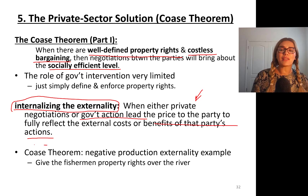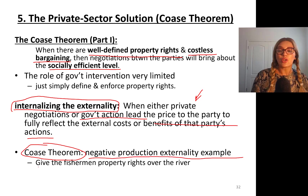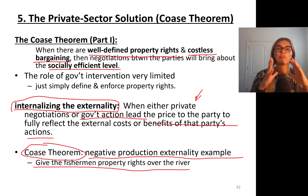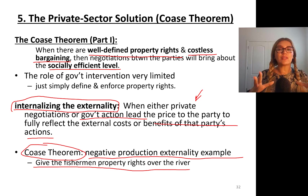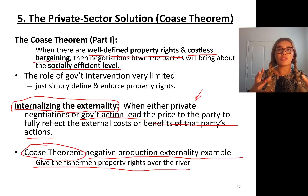Let's go back to Coase theorem. This can apply to a negative production externality example. You can give the fishermen property rights over the river. You can define the property rights — river belongs to the fishermen. If the steel factory wants to pollute this river, then they have to pay fishermen a hundred dollars marginal damage per quantity of steel produced.